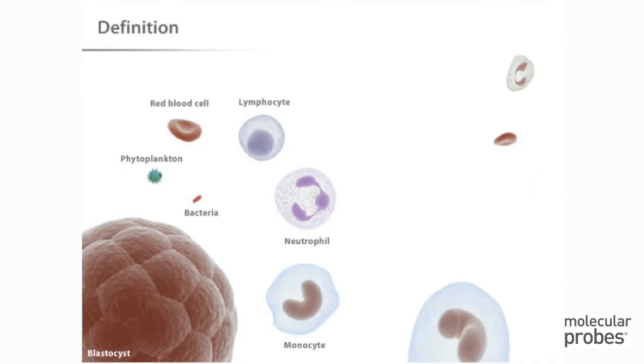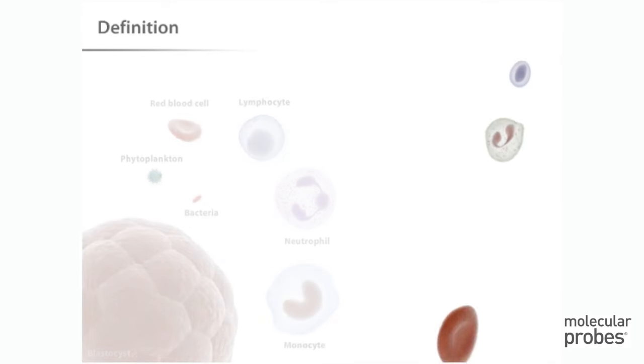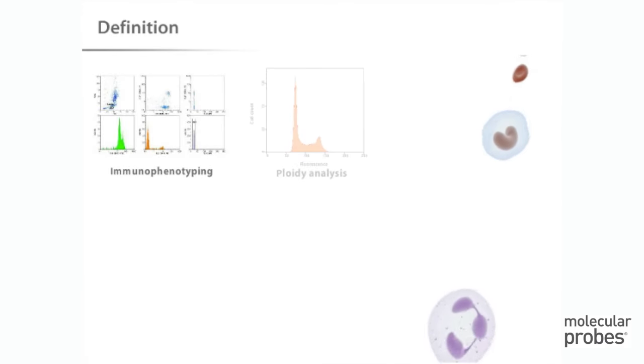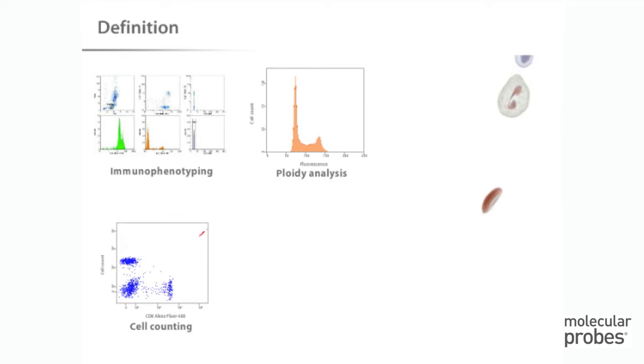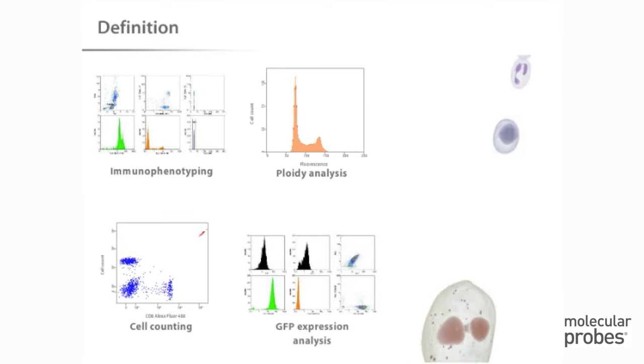Flow cytometry is a powerful technique for the analysis of multiple parameters of individual cells within heterogeneous populations. Flow cytometers are used in a range of applications, from immunophenotyping to ploidy analysis to cell counting and GFP expression analysis.